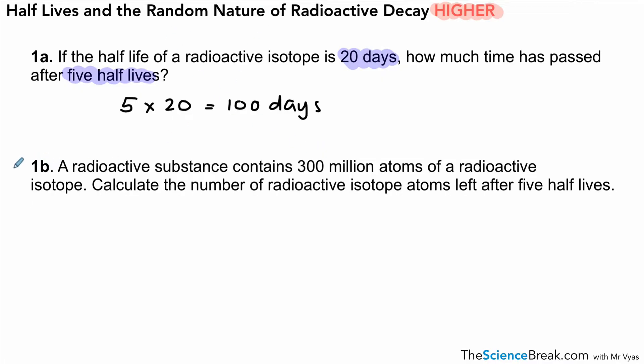Part B says a radioactive substance contains 300 million atoms of a radioactive isotope. Calculate the number of isotope atoms left after five half-lives. There are two ways we can do this. We could actually use an equation to work this out. This might not be the best way because there's so many equations to remember for physics, but I'll show you what it is anyway. We would get our start number and divide it by 2 to the power n, where n is the number of half-lives that have passed.